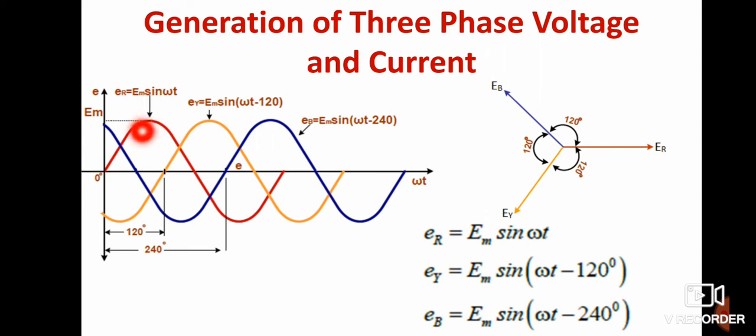This is the induced EMF at coil C1. For coil C2, the induced EMF EY is given by EM sin(ωt - 120°). For the blue line, coil C3, EB equals EM sin(ωt - 240°). These are the induced EMFs generated at each coil, all 120 degrees apart.